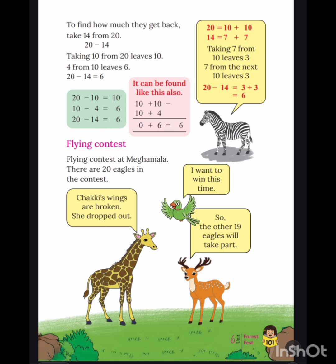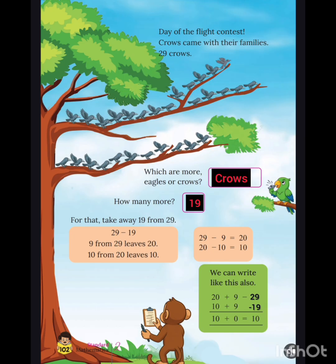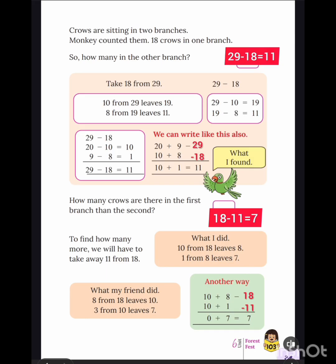Page number 101. Next is the day of the flight contest. Crows came with their family — 29 crows. Which are more, eagles or crows? Answer: crows. How many more? 19. Page number 102.